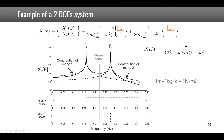This is interesting because you can see the contribution of each mode to the total response. The contribution of mode 1 is a single DOF response with natural frequency f1. Before resonance, phase is zero so x and F are in phase; after resonance there is a 180-degree shift. For the second contribution, the numerator has a negative value, so at zero frequency you already have 180 degrees out of phase.